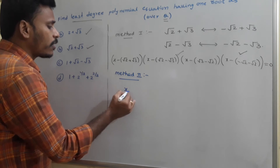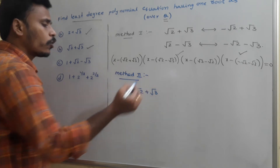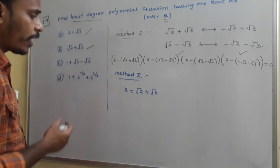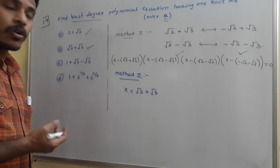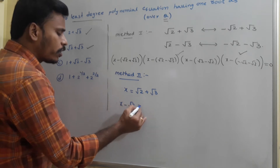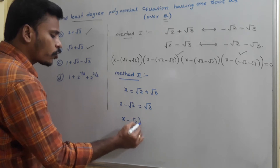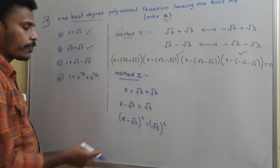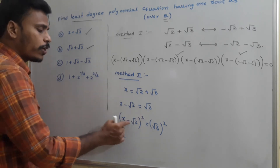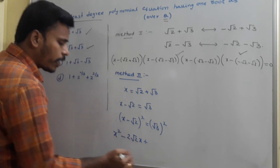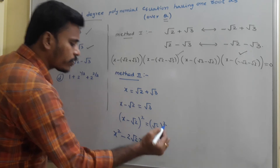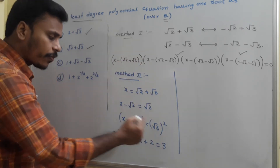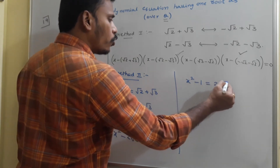According to Method 2, take x equals root 2 plus root 3. From there, try to eliminate the irrational part. Do: x minus root 2 equals root 3. Squaring both sides: (x minus root 2) squared equals 3. Expanding the left side: x squared minus 2 root 2 x plus 2 equals 3. Our target is to eliminate the irrational coefficients, so rearrange: x squared minus 1 equals 2 root 2 x.